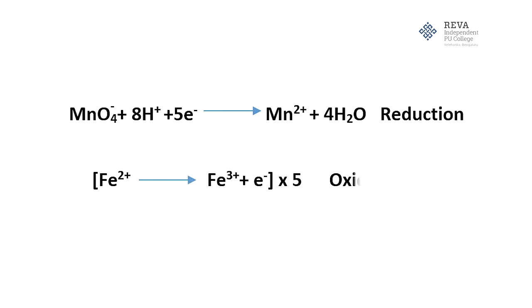In this reaction, permanganate ion of potassium permanganate is reduced to Mn²⁺ ion in presence of acid medium and ferrous ion of ferrous ammonium sulphate is oxidized to ferric ion.